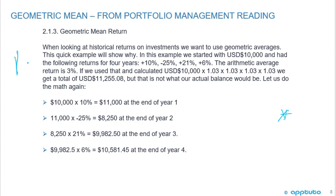This is the example that I use in more than one place. When we're looking at historical returns on investments, we want to use the geometric averages. This quick example will show you why. We start with $10,000 U.S. and we had the following returns for four years: +10%, -25%, +21%, and +6%.